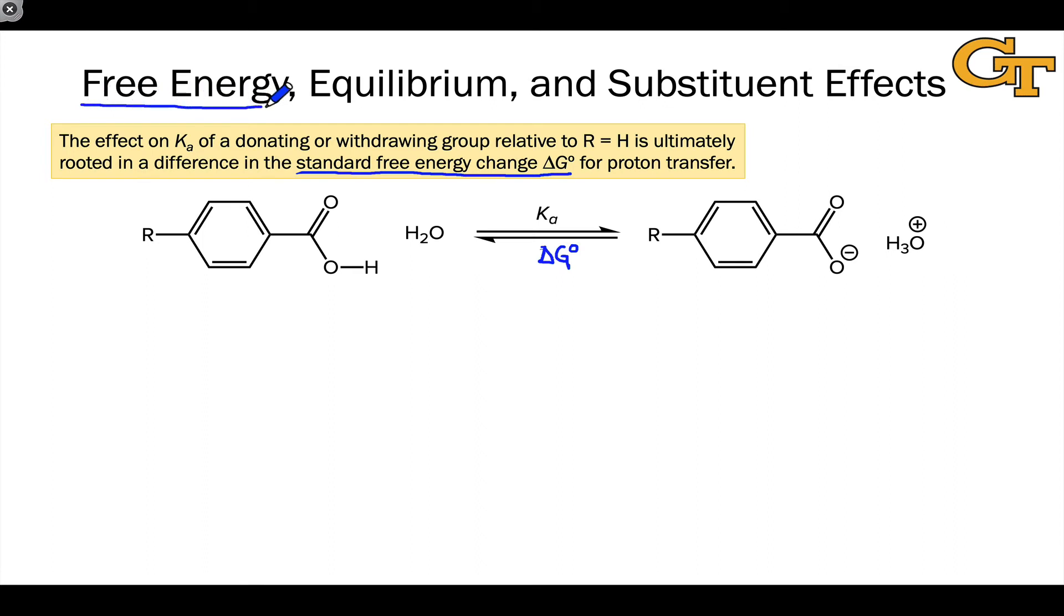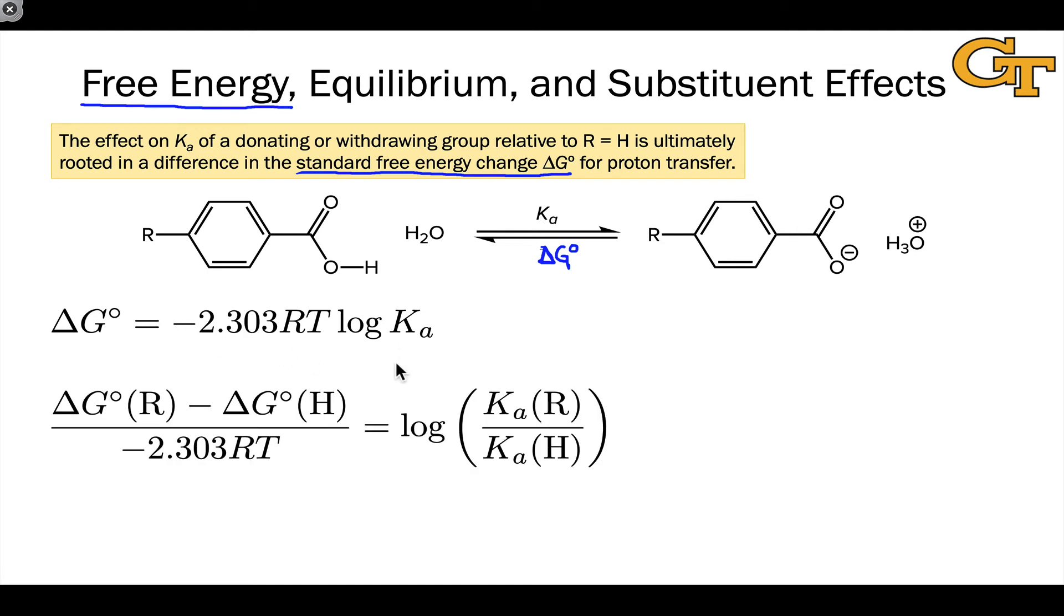And so that effect on Ka is really rooted in a change in the standard free energy, the delta G for proton transfer. This is where free energy comes into the equation. And this is why linear free energy relationships are called linear free energy relationships, since the relationship is really rooted in equivalent changes or conceptually equivalent changes in the delta G value as we change the substituent from hydrogen to a donating group to a stronger donating group, etc. And just to remind ourselves of a little bit of the theory here, keep in mind that delta G and K are related logarithmically or exponentially, depending on how you think about this.